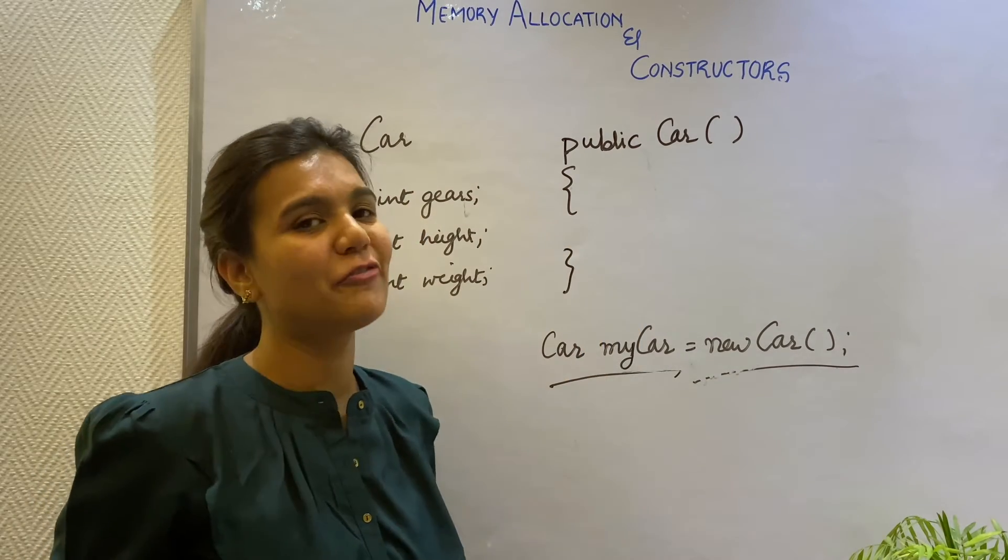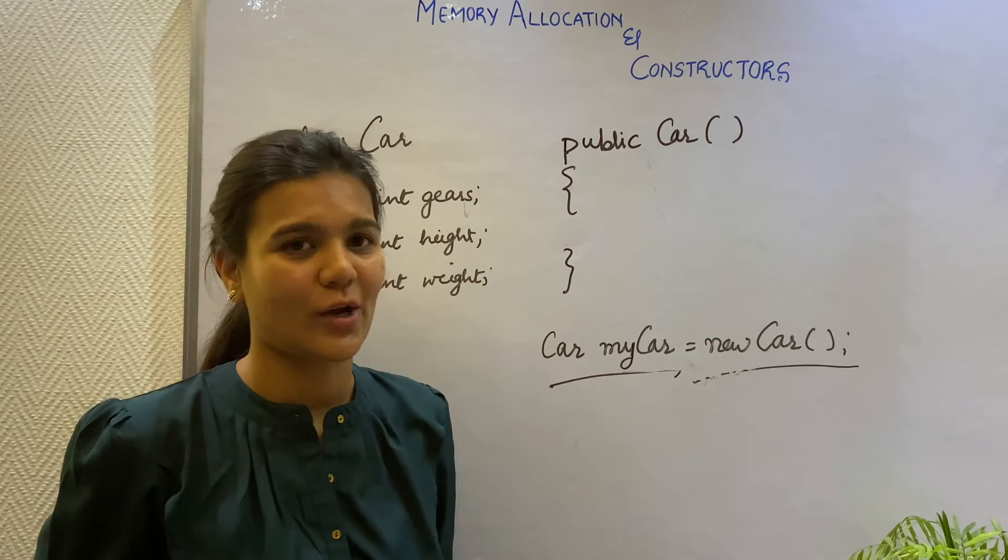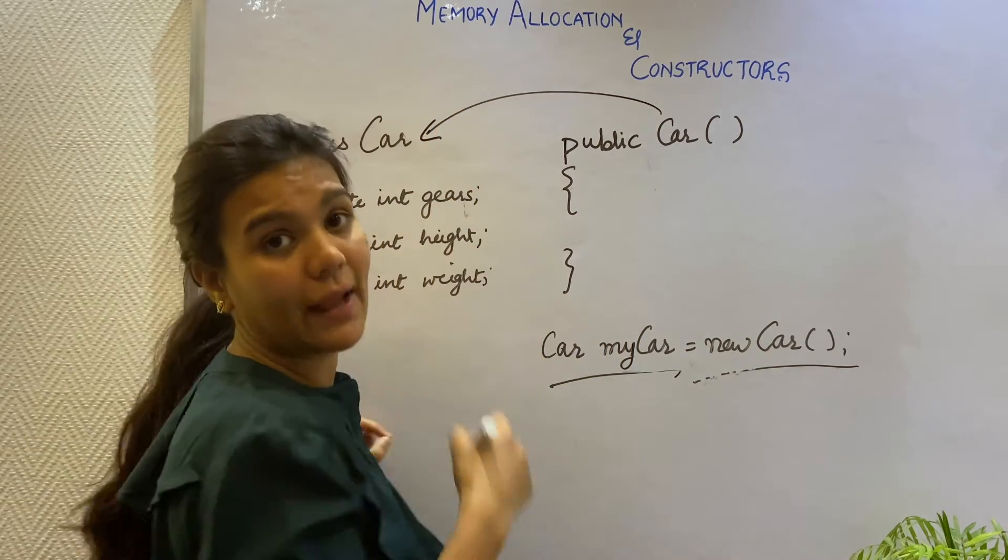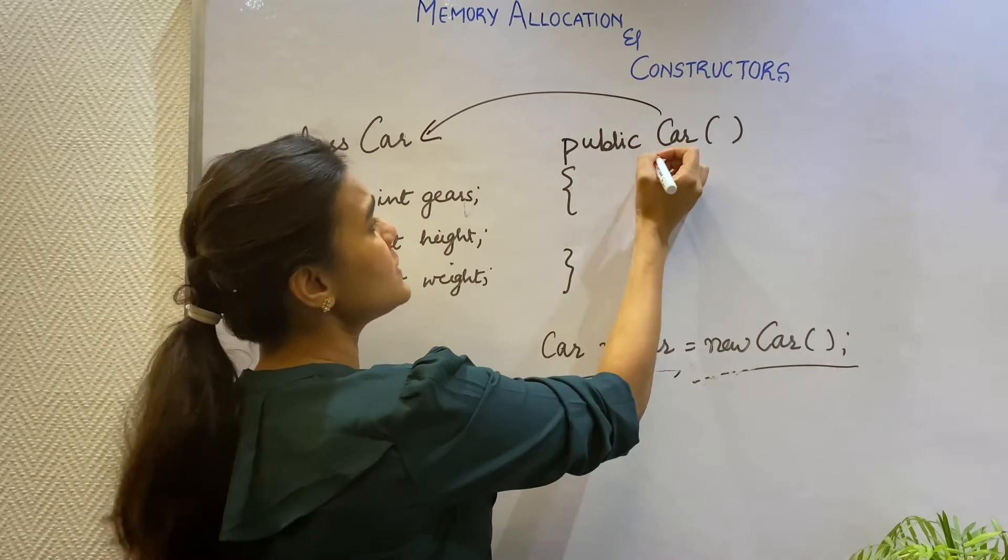By design, it might look and feel like a method, but it is not. Because firstly, it has the name same as that of the class. And secondly, it has no return type. And this applies for all the constructors.